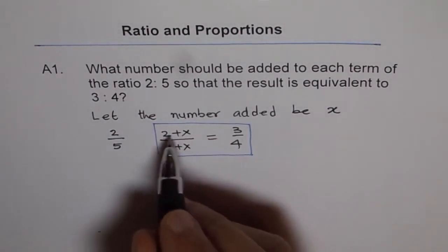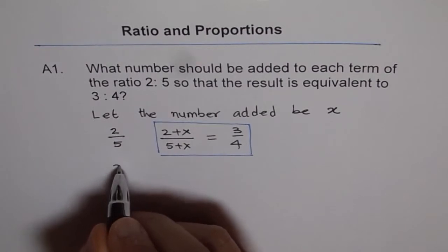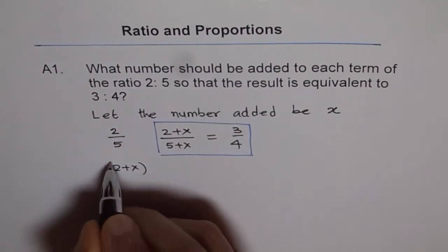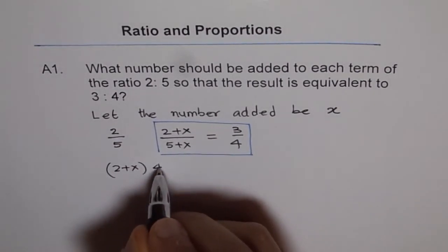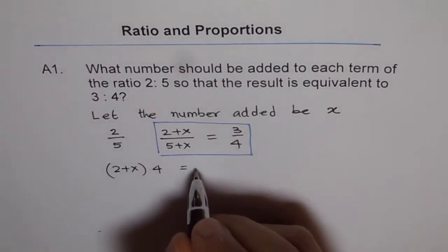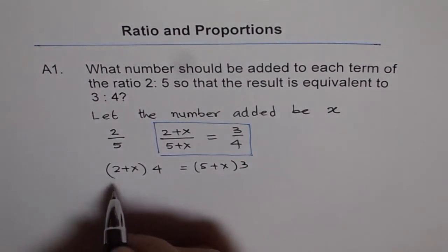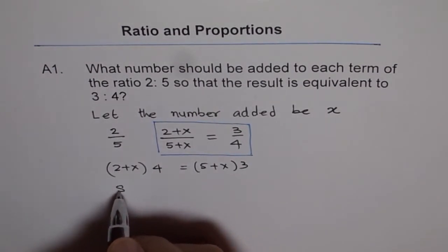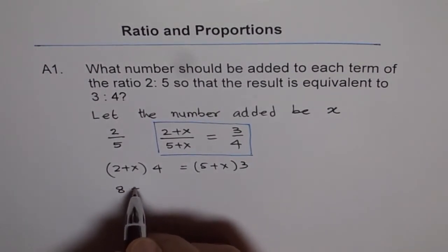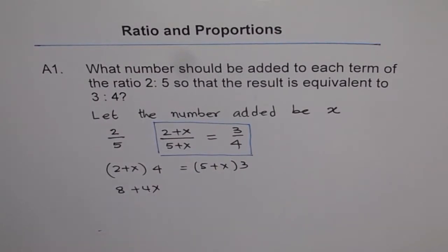So, when we cross multiply, we get 2 plus x times 4 equals to 5 plus x times 3. Now, let us open this bracket. 4 times 2 is 8 and 4 times x is 4x.